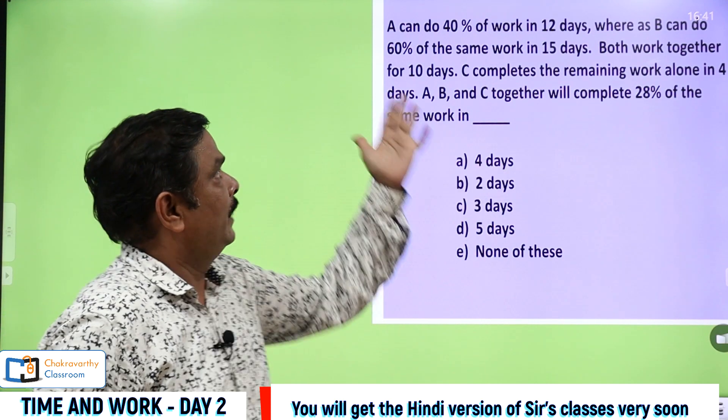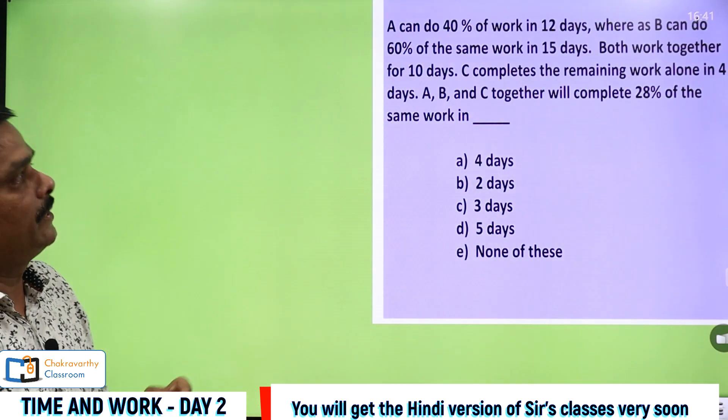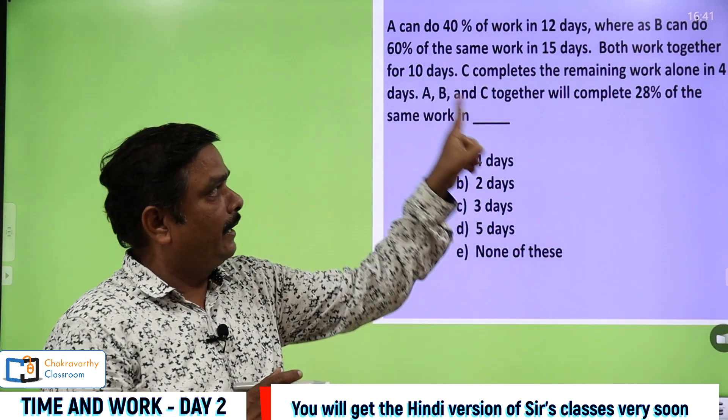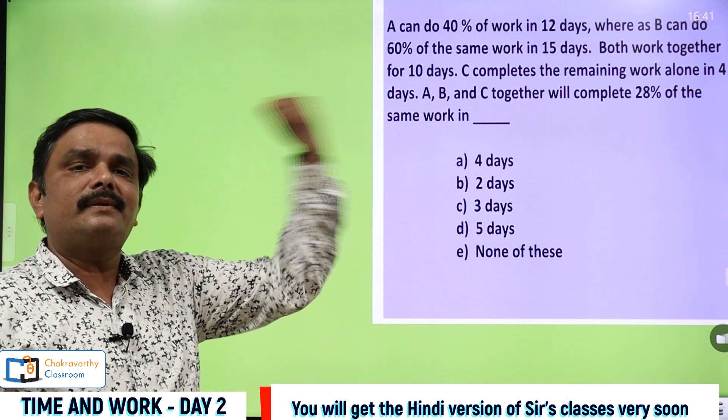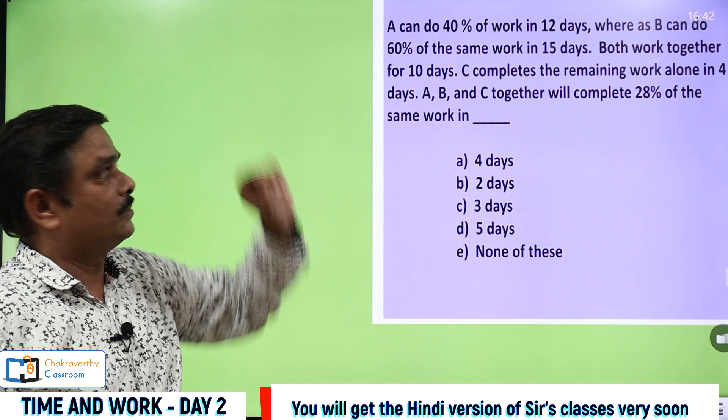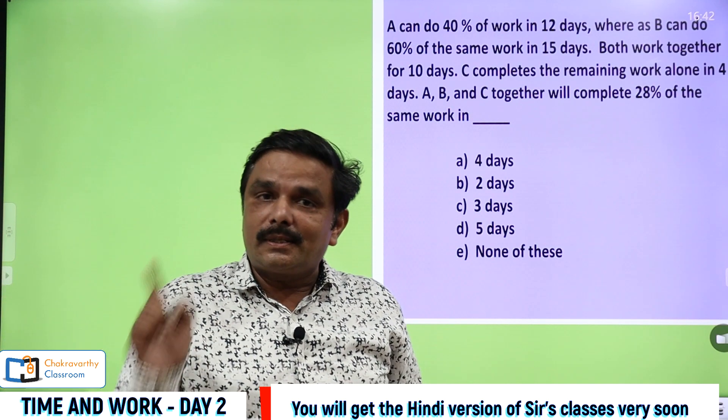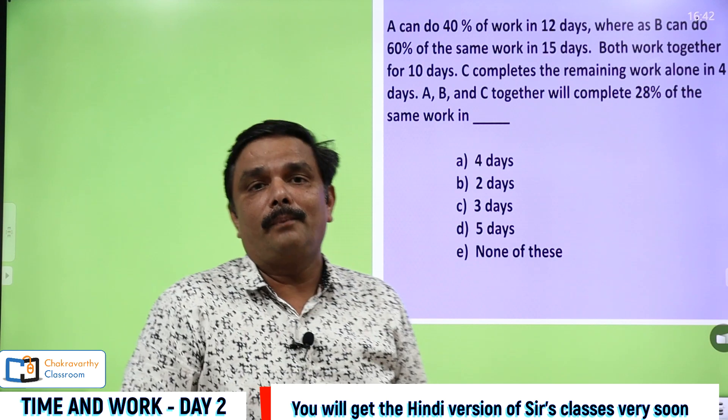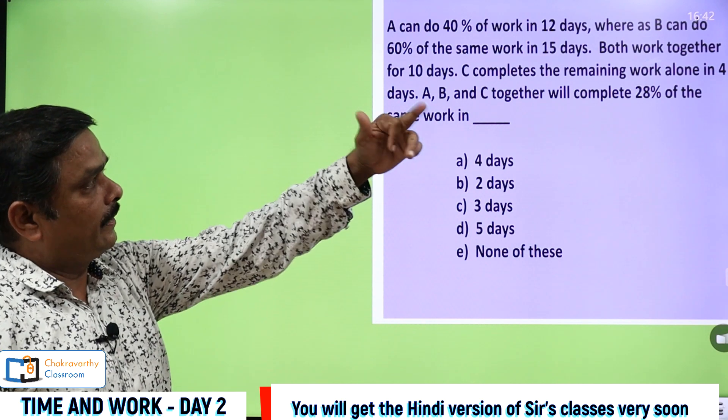See the question here, how they have given? A can do 40% of a work in 12 days whereas B can do 60% of the same work in 15 days. What is the difference between this question and regular or normal questions? In regular questions, they give A's capacity in days directly, B's capacity also in days directly. But now they have given in terms of percentages. We will convert that one into the regular format.